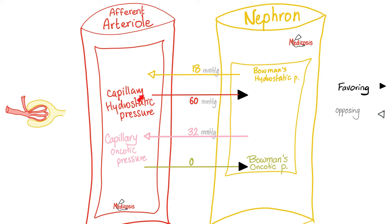Now let's go to the tubule or nephron. Inside the nephron, particularly the Bowman's capsule, there is Bowman's hydrostatic pressure — about 18 — which wants to push. There is also oncotic pressure, but it's zero. Why? Because there is no albumin inside the nephron. A normal kidney does not let protein end up in the urine. If you have protein in the urine, there's a problem. What are you filtering then? Only plasma — only fluid, not plasma proteins and not red blood cells.